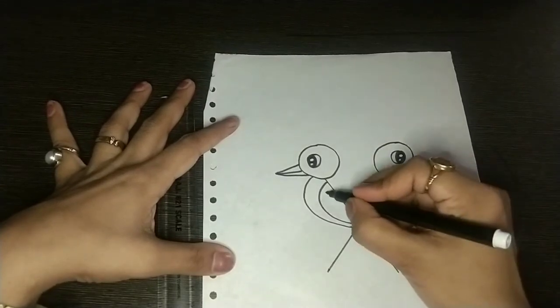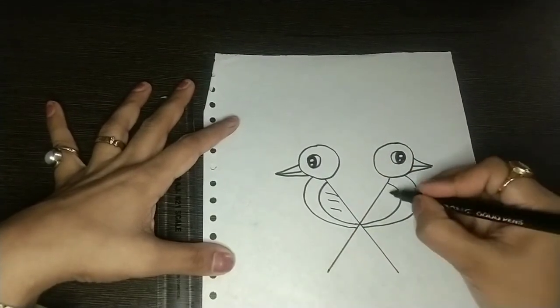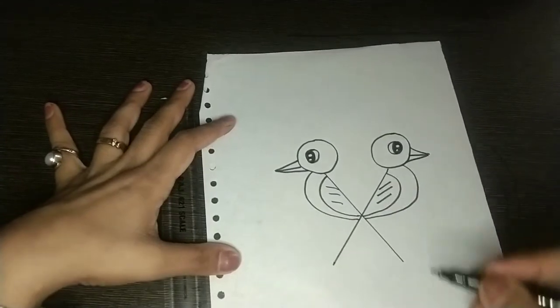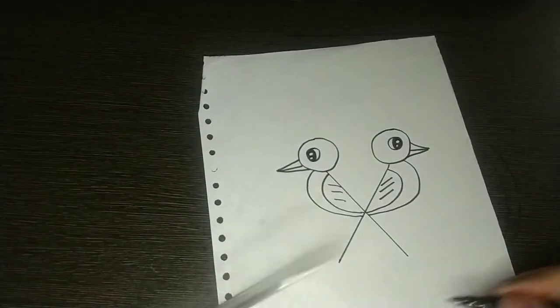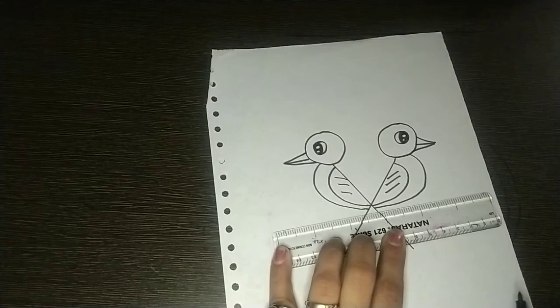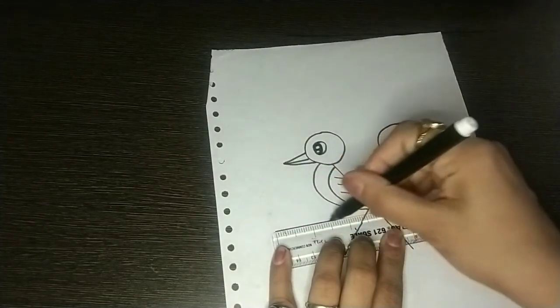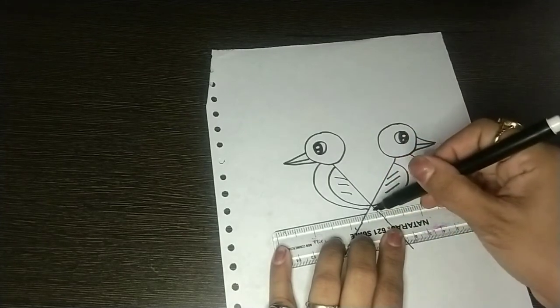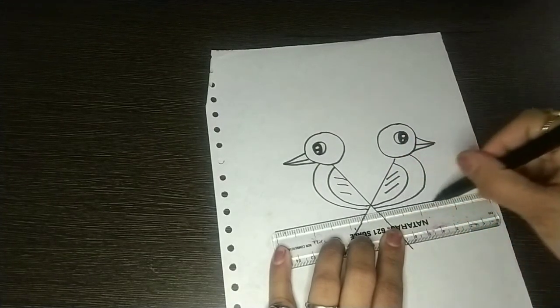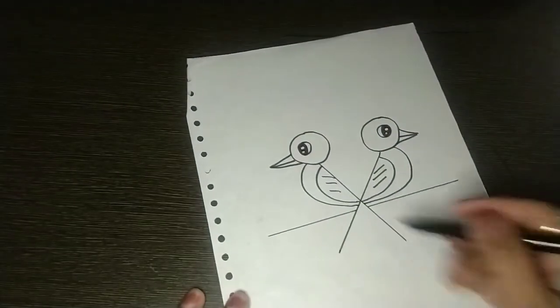Now we will draw three slanting lines like this and three slanting lines like the legs. Then you can use a scale, you can draw like that. We will draw a line like this.